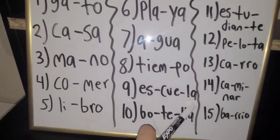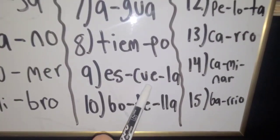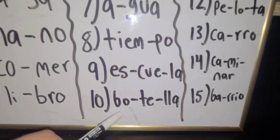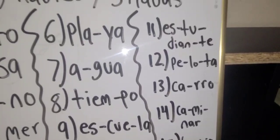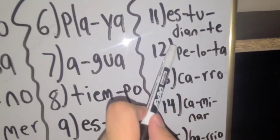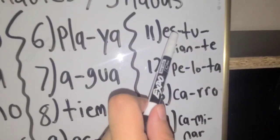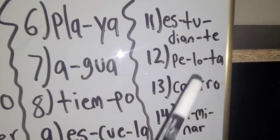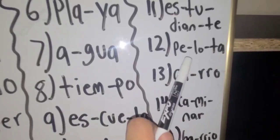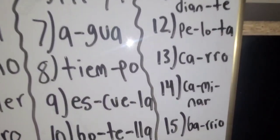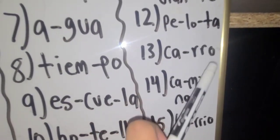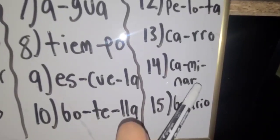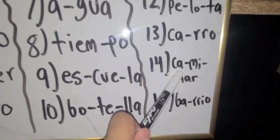Escuela, school, three syllables: es-cue-la. Botella, bottle, three syllables: bo-te-lla. Number eleven, estudiante, four syllables: es-tu-dian-te. Number twelve, pelota, three syllables: pe-lo-ta. Number thirteen, carro, two syllables, car. Number fourteen, caminar, to walk, three syllables: ca-mi-nar.